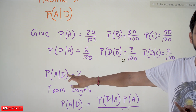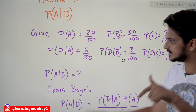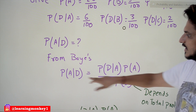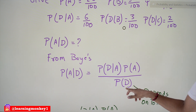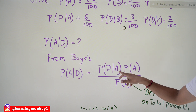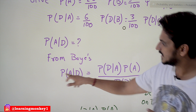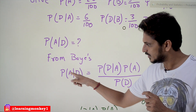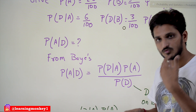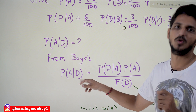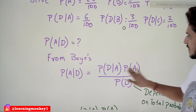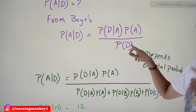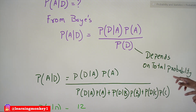What we have to identify is: probability of A given D (defective). From the Bayes theorem discussed in the previous class, probability of A given D equals probability of D given A multiplied by probability of A, divided by probability of D. Here D means defective and A means machine A. This is the Bayes theorem equation. The probability of D (defective) is completely dependent on total probability.